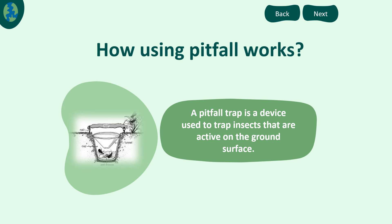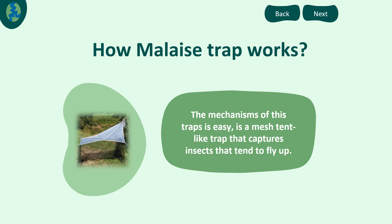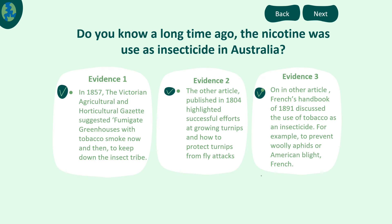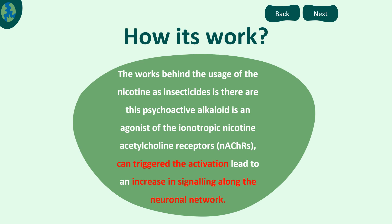A pitfall trap is a device used to trap insects that are active on the ground surface. The malaise trap is a mesh tent-like trap that captures insects that tend to fly upward. A long time ago, nicotine was used as an insecticide. The mechanism behind the usage of nicotine as an insecticide involves a psychoactive alkaloid that acts as an agonist of the ionotropic nicotinic acetylcholine receptor. This can trigger increased signaling along the neuronal network, which can eventually lead to death.